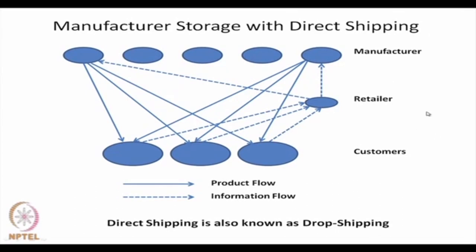The second option is where the manufacturer has the main storage. The retailer's work is only to pass on information to the manufacturers. Customers place their order with the retailer because the retailer is close to the customers, and retailers in turn inform the manufacturers of the type of requirement. The manufacturer directly makes the supply to the customer. This direct shipping is also known as drop shipping.